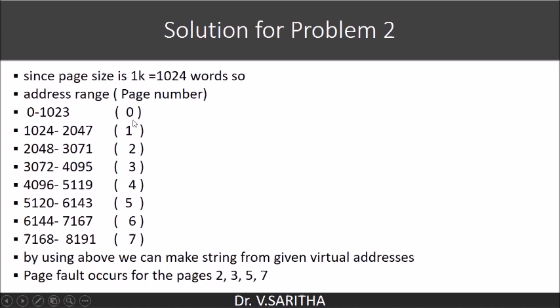Now, the address range for various page numbers is as for page 0 it is 0 to 1023, and for page 1 it is like this and so on. So by using the above information we can make string from given virtual addresses.